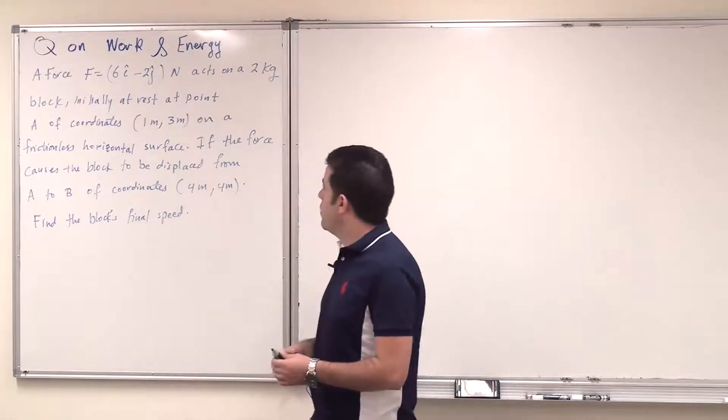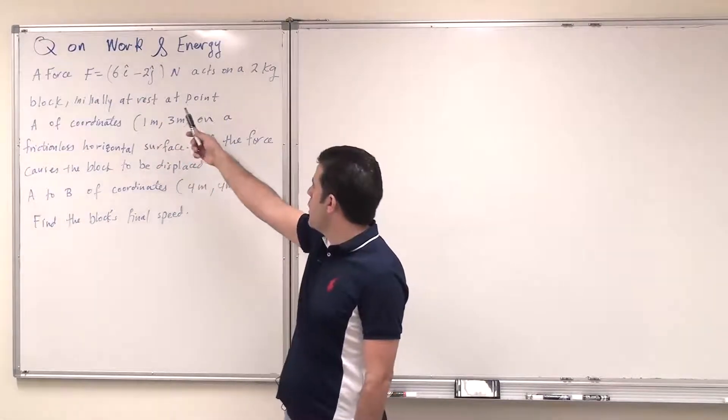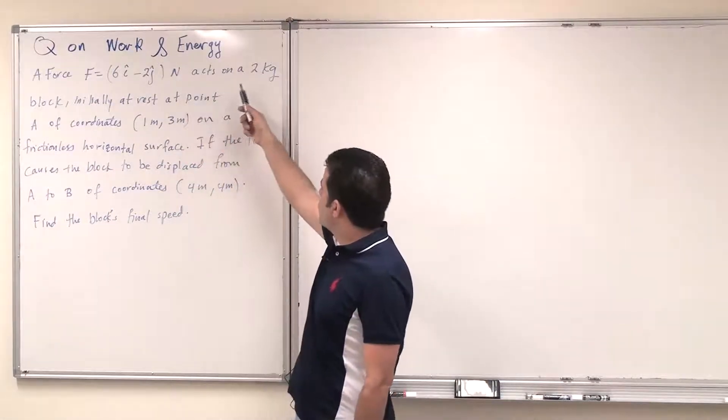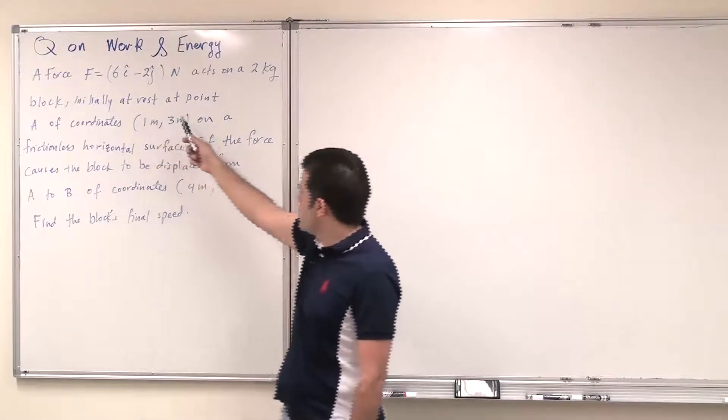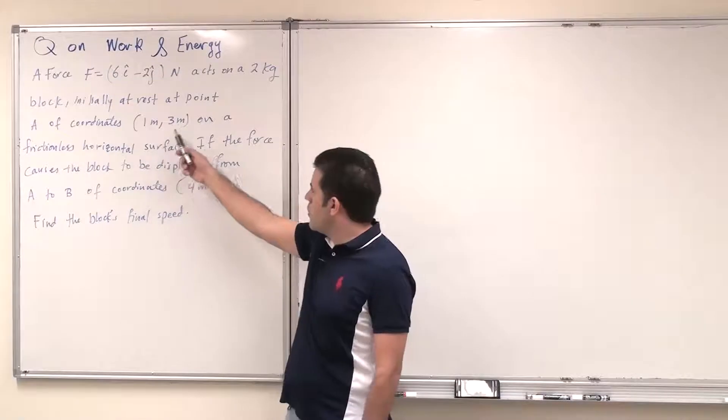Assalamu alaikum. This question on work and energy. A force F 6i hat minus 2j hat newtons acts on a two kilogram block initially at rest at point A of coordinates one meter and three meter.